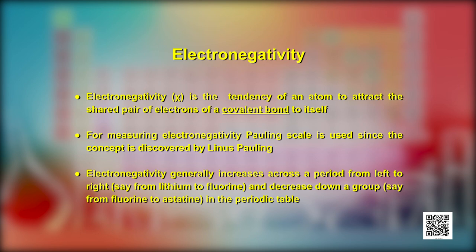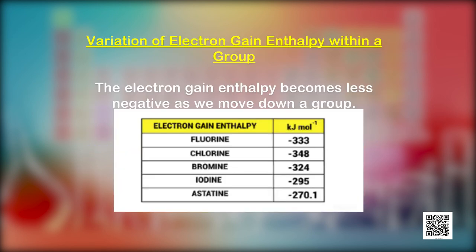The electronegativity of any given element is not constant — it varies depending on the element to which it is bonded, though it is not a directly measurable quantity. Electronegativity values of elements are available in literature on different scales; however, the most widely used is the Pauling scale. In the periodic table, fluorine with the value of 4 is the most electronegative element, whereas cesium with the value of 0.7 is the least electronegative element.